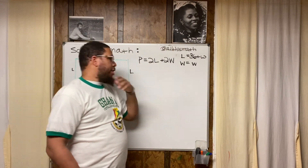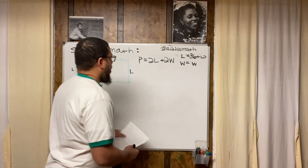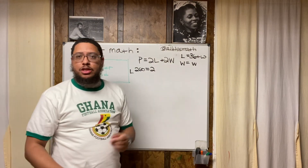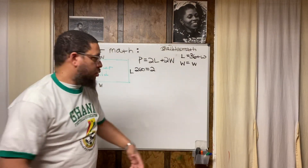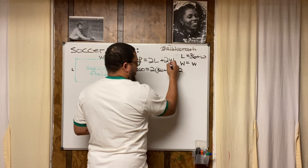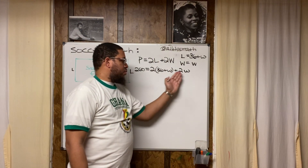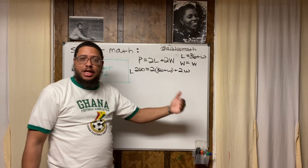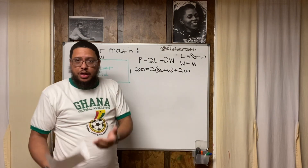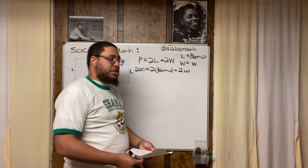Now we replace everything we know into the formula. P is 260, and L is 36 plus W, so the equation becomes: 260 equals 2 times (36 plus W) plus 2W. We replaced L with the expression 36 plus W. Notice we now have the same variable W in two places — that will let us solve for W first, and then calculate L by adding 36 to whatever W turns out to be.